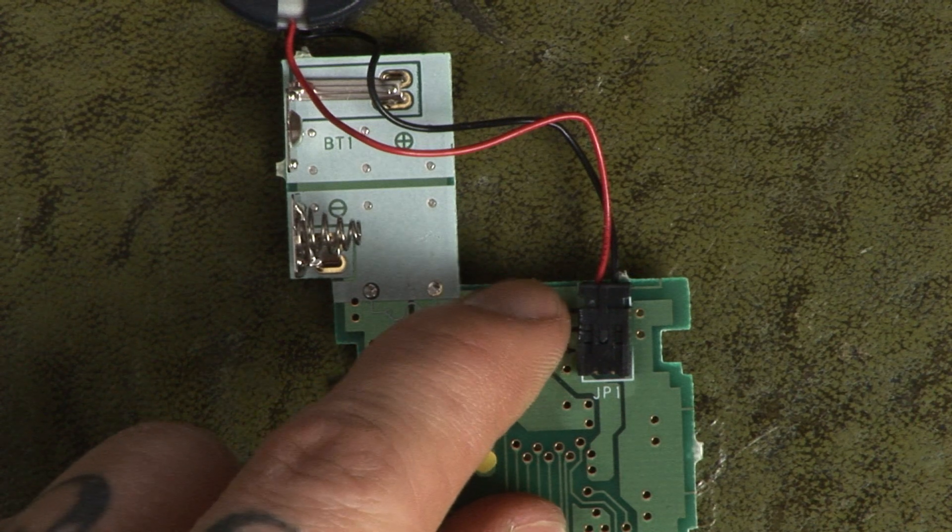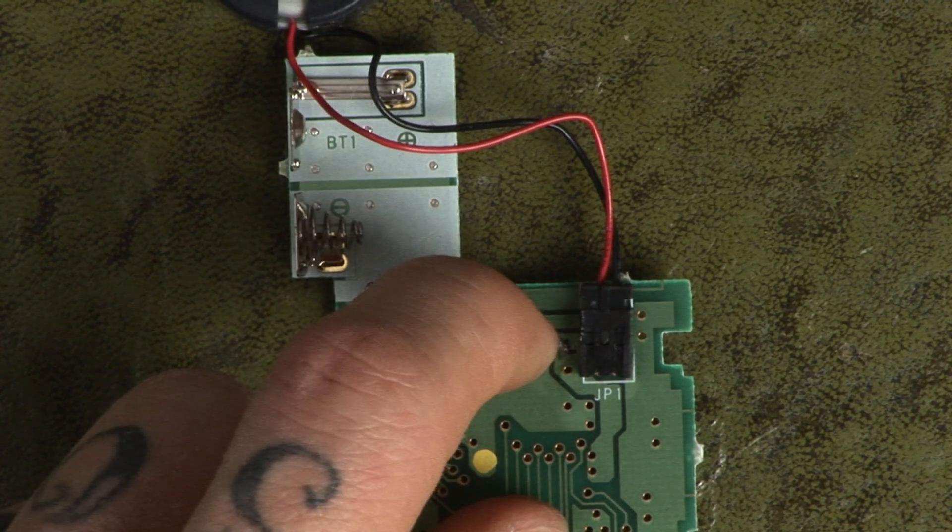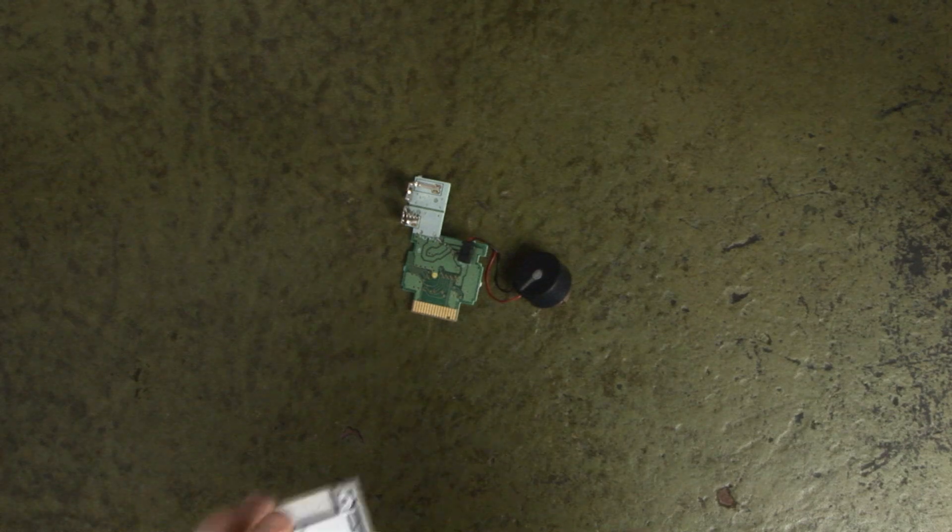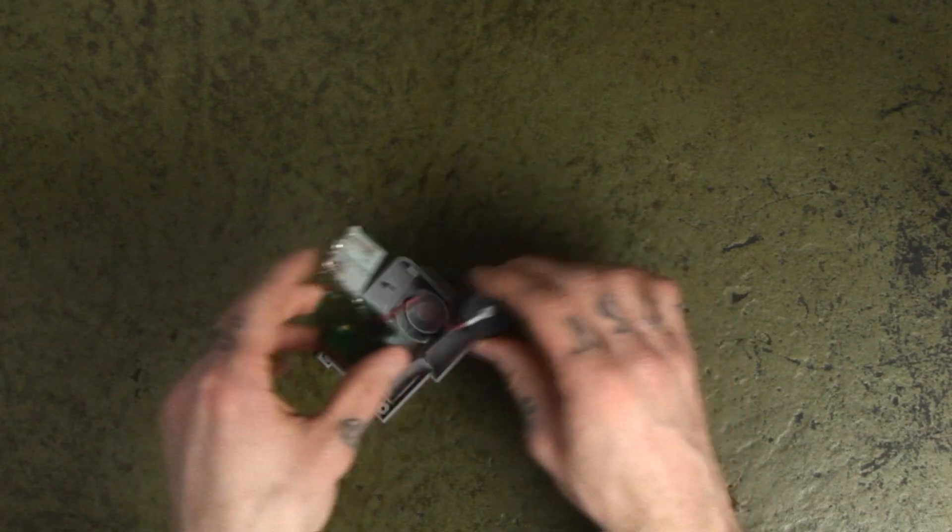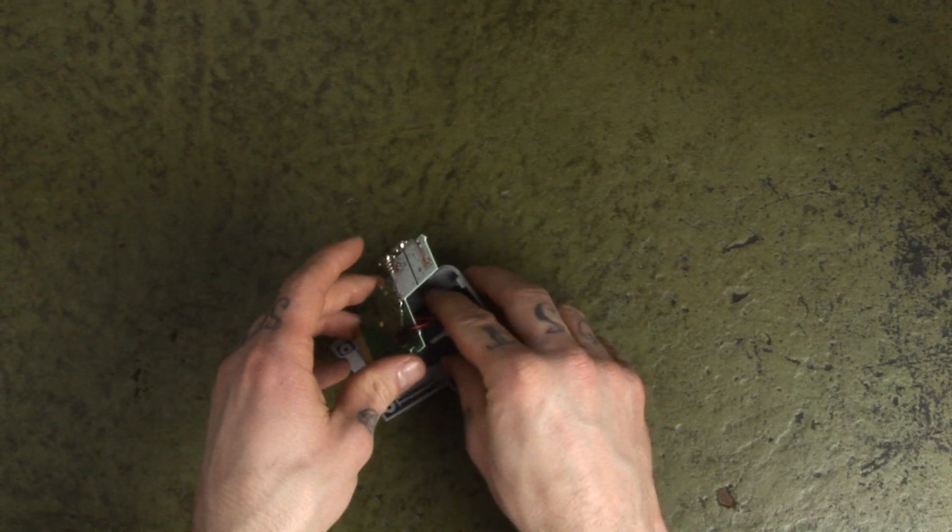I gave the resistor a little wiggle with my finger to check that it had properly soldered in place. Once you are happy with your soldering, you can reassemble your rumble pack. This is the reverse of how you took it apart.